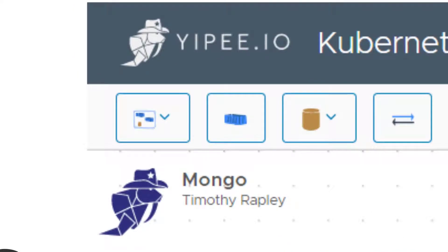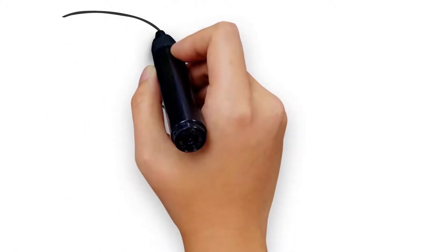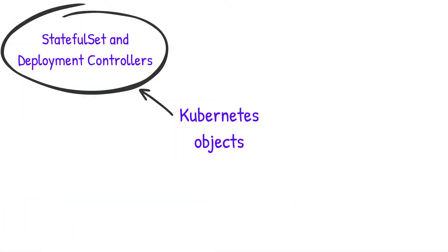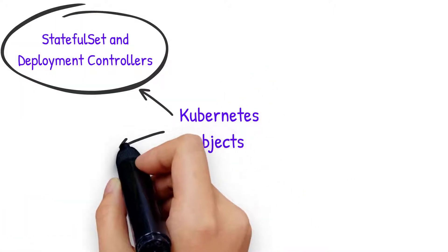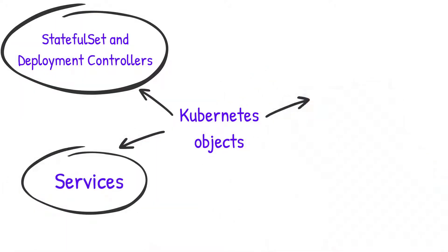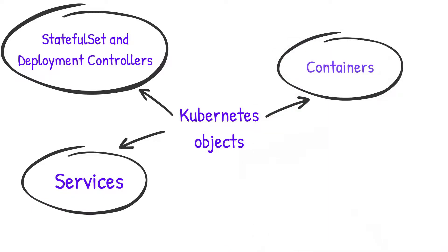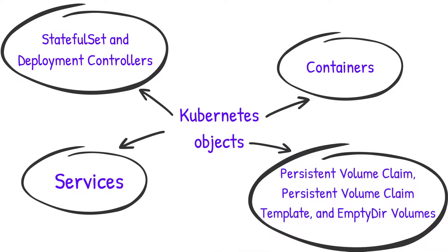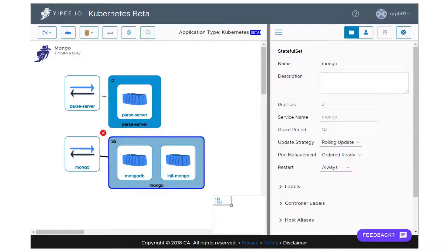new controls allow you to create native Kubernetes objects like StatefulSet and Deployment Controllers — with more to follow — Services, Containers, and Persistent Volume Claim, Persistent Volume Claim Template, and Empty DIR volumes.